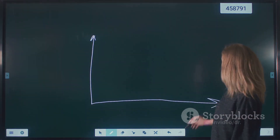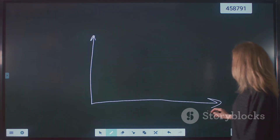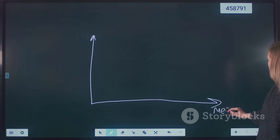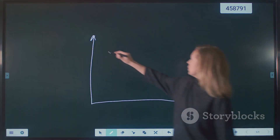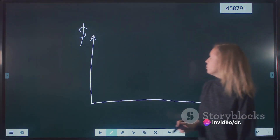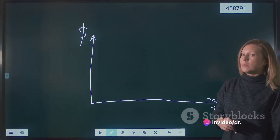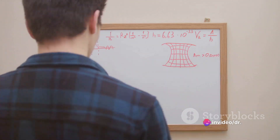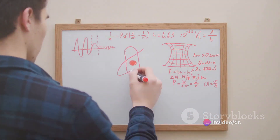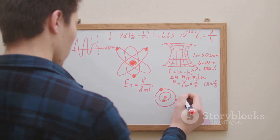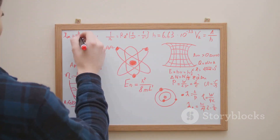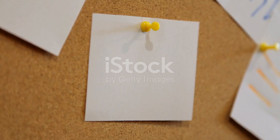Let's imagine a research hypothesis as a bridge connecting the known to the unknown. It's written in an if-then format. For instance, if a company launches a new advertising campaign, then its sales might increase by a certain percentage. It's specific, measurable, and directly tied to the research question.